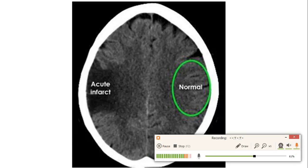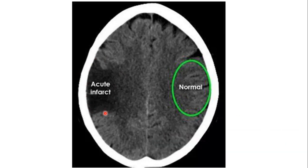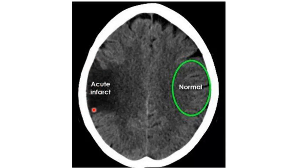Here we can see an acute infarction. How do we know it is acute and not chronic? There is edema — decreased density of the brain parenchyma due to fluid. The overlying sulci are effaced, not obvious compared to the other side where sulci are prominent and appear normal. This is an acute infarction at the distribution of the right middle cerebral artery.